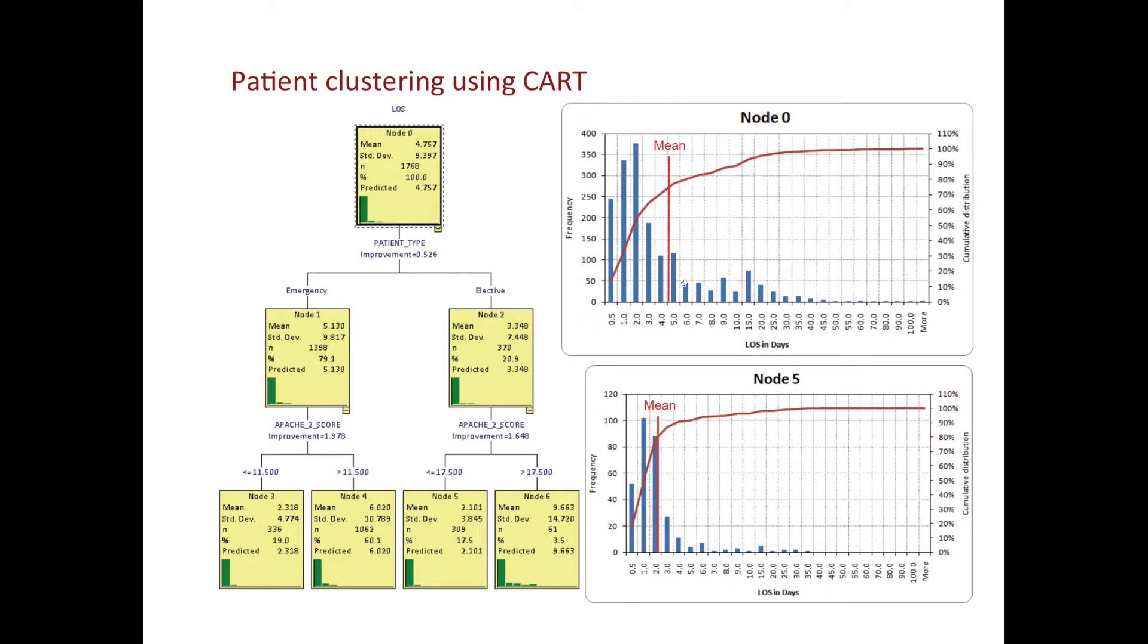And in fact, we can also calculate the reduction in variance of the whole tree, or RIV, which tells us how much more information we have squeezed out of the data than just treating all patients from node 0. Without wishing to go into detail, in fact, we would need to sample from all our data a training set to build the CART tree, and then test on a remaining testing data set. This is good practice for whatever statistical model you are building.